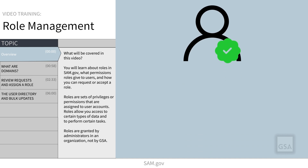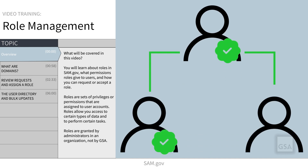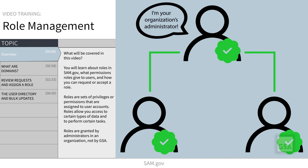In SAM.gov, roles are sets of privileges or permissions that are assigned to user accounts that allow you to access certain types of data and to perform certain tasks. Roles are granted by the administrators of an organization, not by GSA. Role privileges are different for federal and non-federal users and also different for each domain.